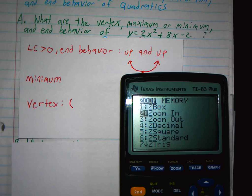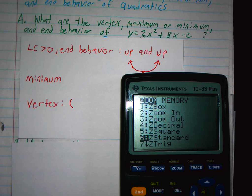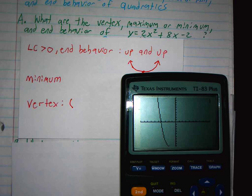Then you go down to standard. Standard will set it from negative 10 to 10, negative 10 to 10. Mine was already set like that, that's why it didn't change any. Is yours good now? Yeah.